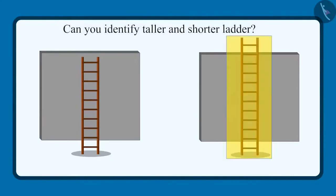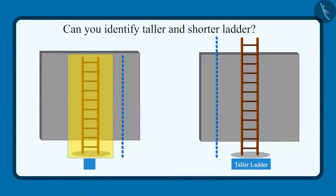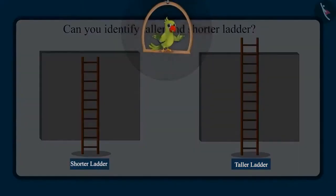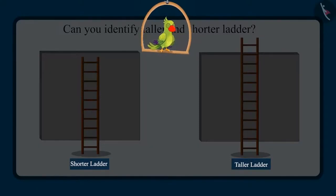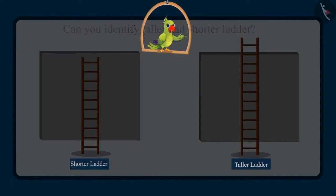And out of these two ladders, this ladder is taller and this ladder is shorter. So children, I hope that you enjoyed identifying and comparing taller and shorter objects. Now you can identify the tall and short objects around you and compare them to tell which is taller and which one is shorter.